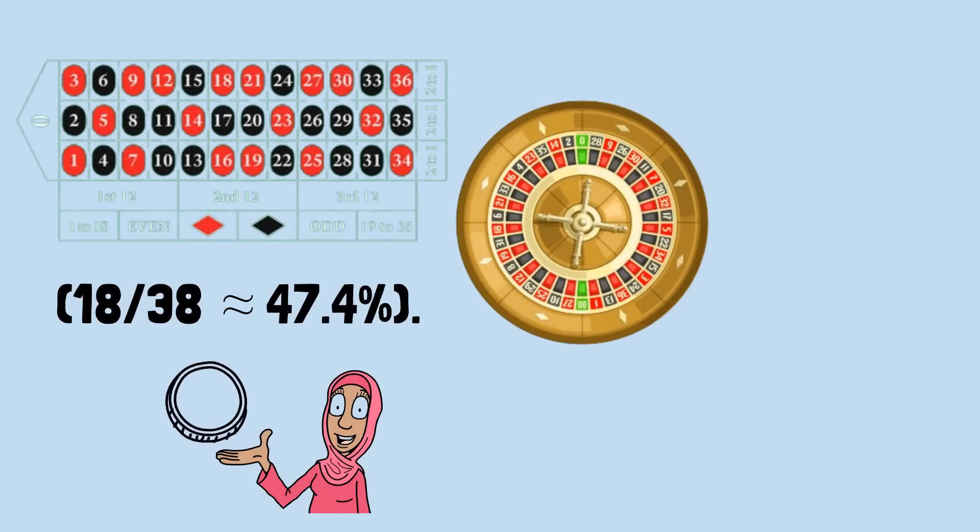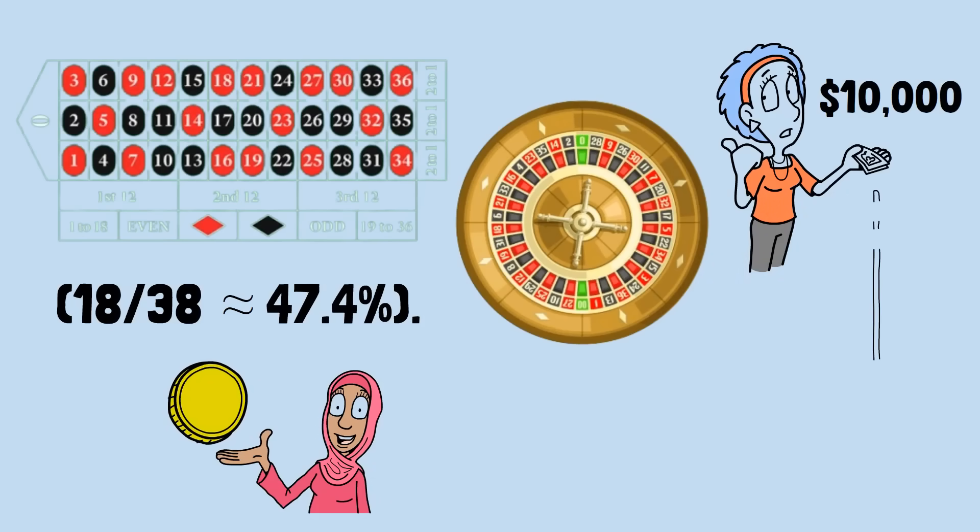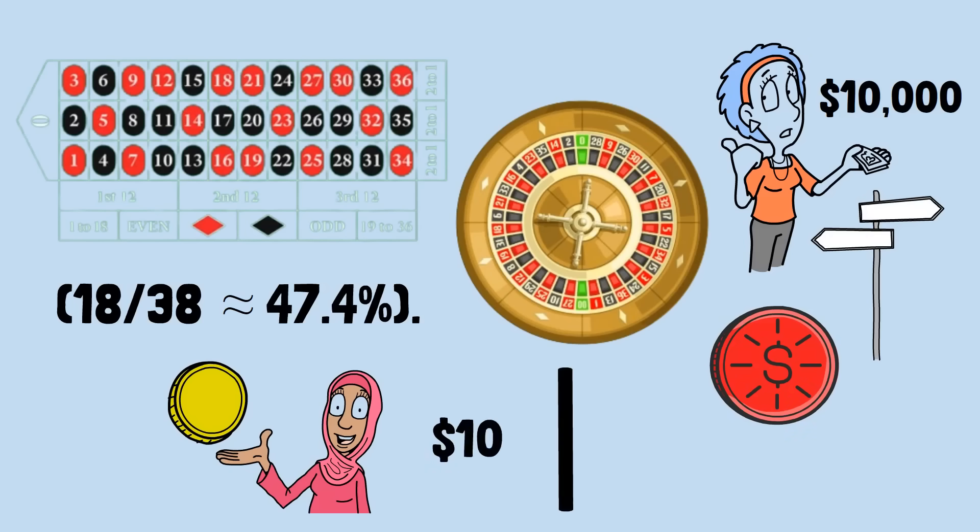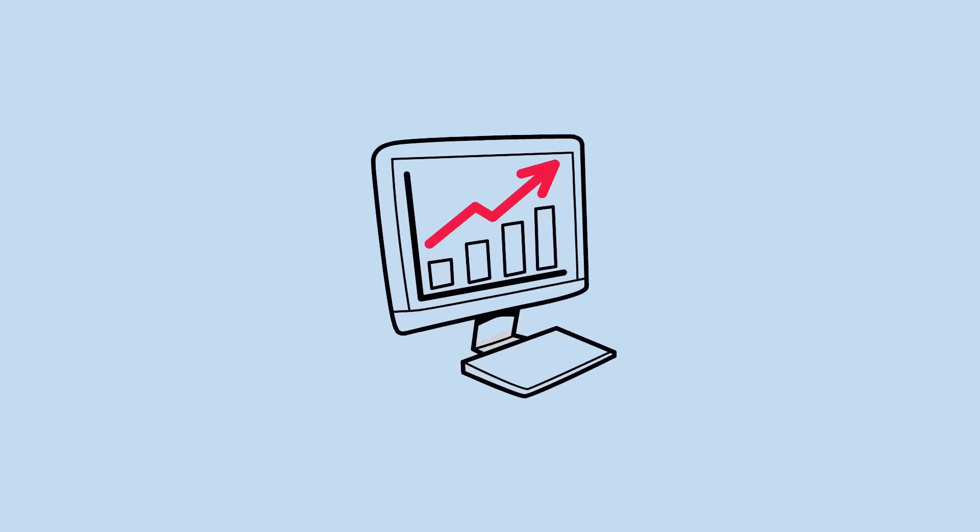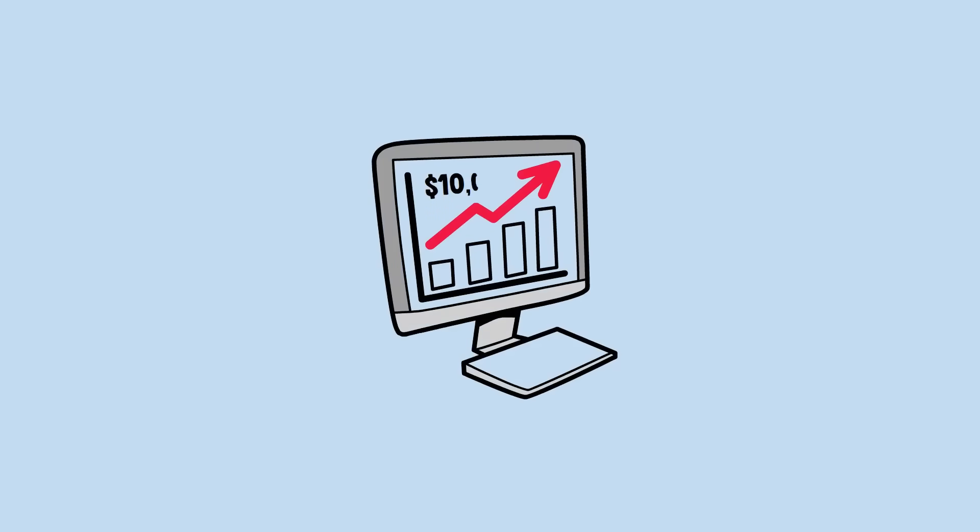Alice arrives with $10,000 but takes a completely different approach. She's going to bet just $1 on Red, over and over again, until one of two things happens: either she's up exactly $100, or she loses everything. This might seem like a much safer strategy. After all, she has 10,000 chances to slowly build up her winnings.